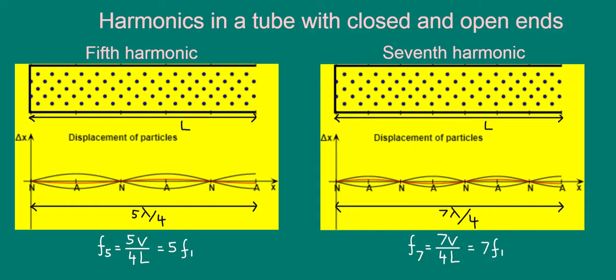This is because the stationary wave patterns that can exist here must have a node at the closed-left end and an anti-node at the open-right end of the tube. Another way of putting this is that an odd number of quarter wavelengths must fit into the length of the tube.